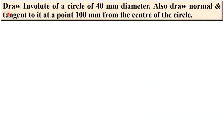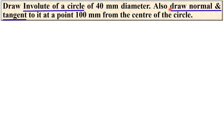Now let us see the description of the given problem. Draw the involute of a circle of 40 mm diameter. Also draw the normal and tangent to it at a point 100 mm from the center of the circle. So there are two different objectives: first, draw the involute of a circle, and second, draw the normal and tangent.